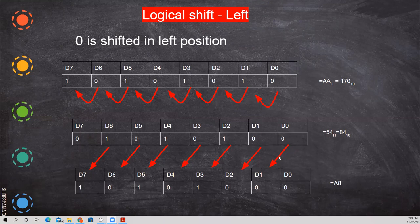When you shift again, the bits shift along. D0 will have zero and the outgoing bit is gone. This is equal to division — 170 is divided and it becomes 84. Again it becomes A8 (168). So logical shift left is equivalent to division by 2.